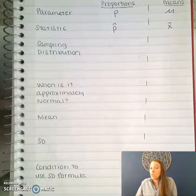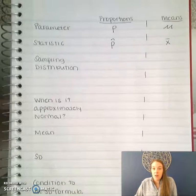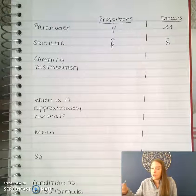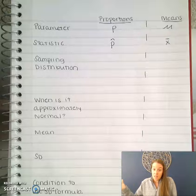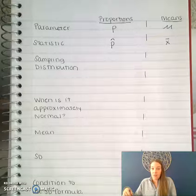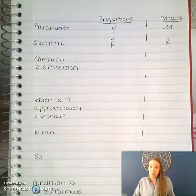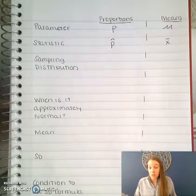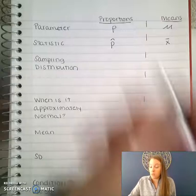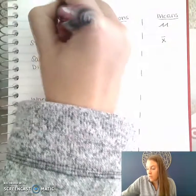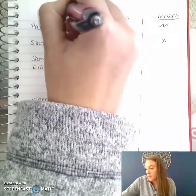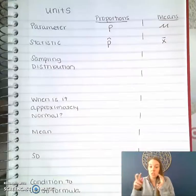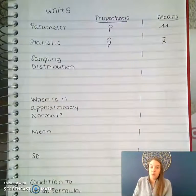I ran out of ink in my printer, so I did not have the ability to print it. So I just hand wrote it, probably similar to how you guys are going to do it too. This is the unit five cheat sheet or graphic organizer.